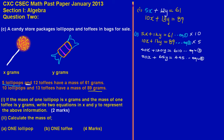Now I'll subtract equation 4 from equation 3. When a negative sign is in front of a bracket, it changes the sign of every term inside. The positive 50x inside the bracket becomes negative 50x, so 50x − 50x cancels out — the X's are eliminated.